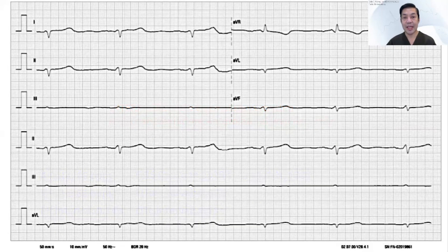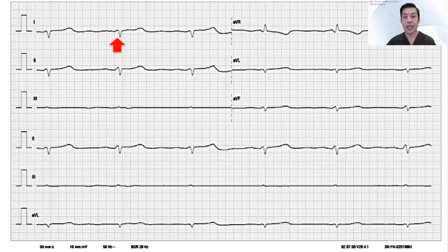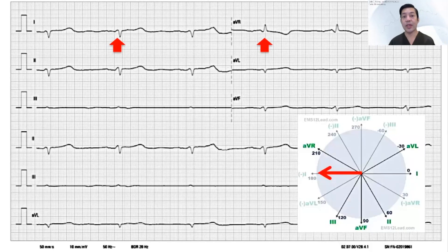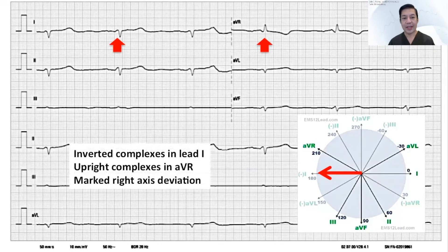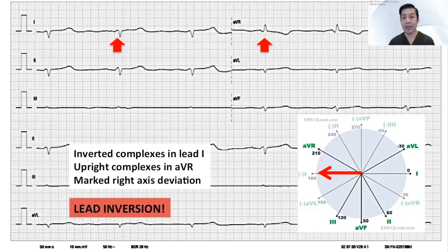Let us re-examine this ECG, specifically the axis. We notice that the complexes in lead 1 are all inverted and in AVR they are all upright, which is quite unusual because lead 1 is usually positive and AVR is usually negative. Secondly, in the hexagonal axis, we measured severe right axis deviation at 180 degrees. In fact, inverted complexes in lead 1, upright complexes in lead AVR, and marked right axis deviation make us suspect the presence of lead inversion — in this case, right and left arm lead inversion, meaning the electrodes on the right arm and left arm were actually interchanged.